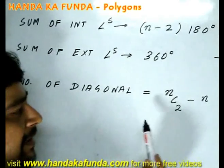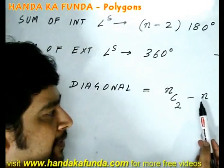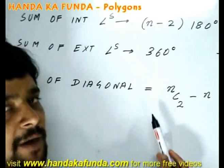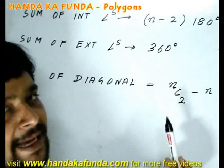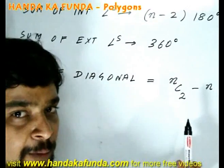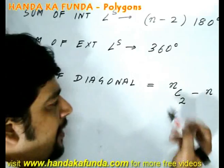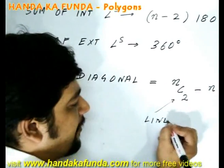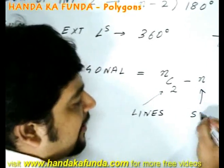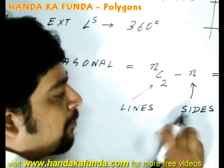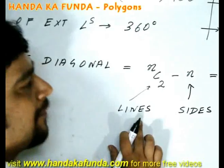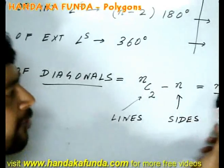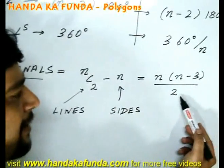The number of diagonals in a polygon is given by nC2 minus n. Think about it. If it is an n-sided polygon, I have n vertices. From those n vertices, how many lines can I draw? I need to choose any two points. From n points, I can choose two points in nC2 ways. So this is my total number of lines. Out of these lines, n are my sides. So if I remove the number of sides from the lines, I will get the number of diagonals. If you solve it out, it comes out as n into n-3 by 2.